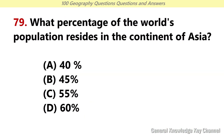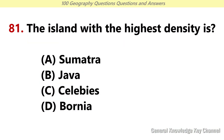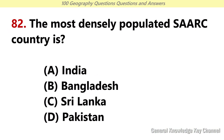What percentage of the world's population resided in the continent of Asia? Answer C: 55%. Which of the following countries has the largest population? Answer B: Indonesia. The island with the highest density is? Answer B: Java. The most densely populated country is? Answer B: Bangladesh.